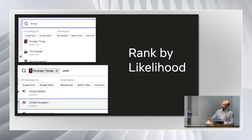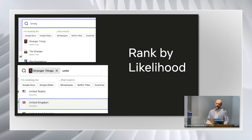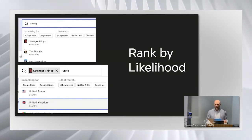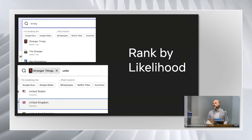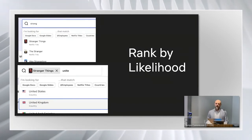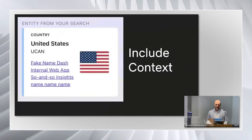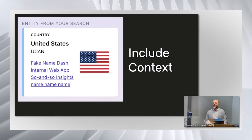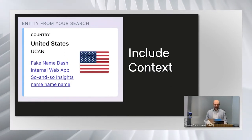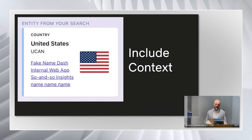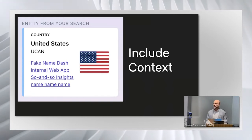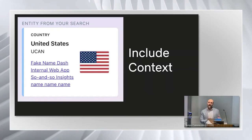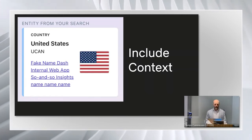One thing we tried to replicate was ranking by likelihood. Our search uses information about internal entities to rank the likelihood that you're searching for them — such as the popularity of a show or the size of a particular market. We also have contextual information from other systems to help people find the resources most likely to be up to date. We don't want to include documents that may be years old; we want to show people the latest numbers from dashboards.